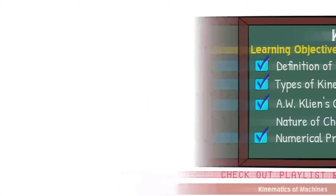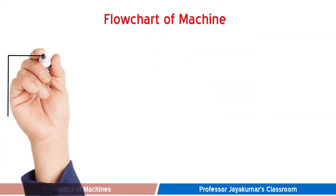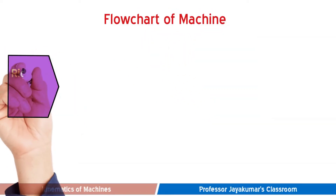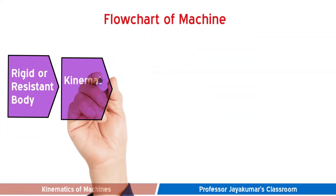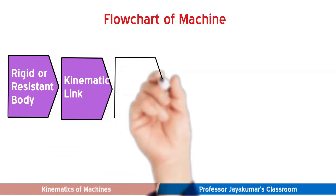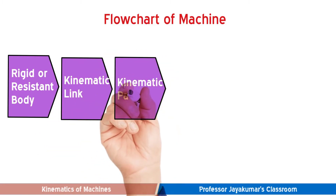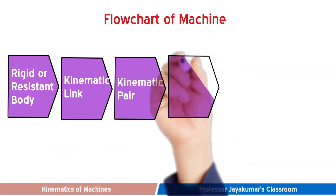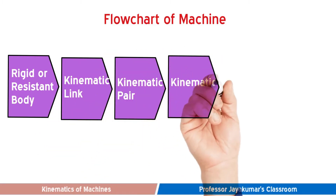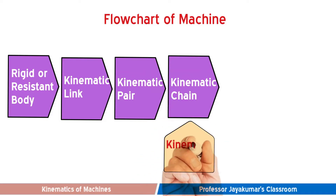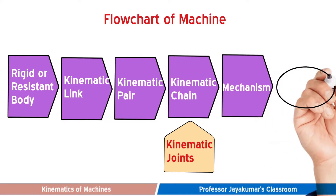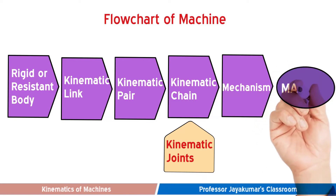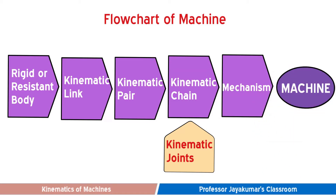In the below flowchart of machine, we have already discussed in detail about kinematic links and kinematic pairs. The combination of kinematic pairs will form a kinematic chain. So we will be discussing in detail about kinematic chain in this video.